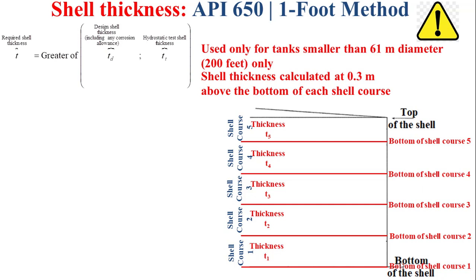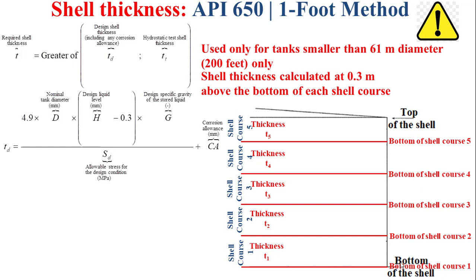The required shell thickness t is the greater of the design shell thickness td and the hydrostatic test shell thickness tt. The design shell thickness td is determined as a function of the nominal tank diameter D, the design liquid level h, and the design specific gravity of the stored liquid g.